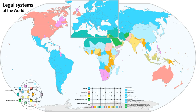The contemporary legal systems of the world are generally based on one of four basic systems: civil law, common law, statutory law, religious law, or combinations of these. The legal system of each country is shaped by its unique history and so incorporates individual variations. The science that studies law at the level of legal systems is called comparative law. Both civil and common law systems can be considered the most widespread in the world — civil law because it is the most widespread by landmass, and common law because it is employed by the greatest number of people.